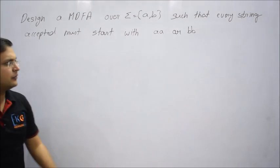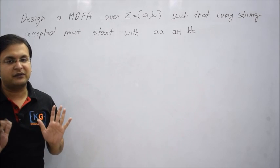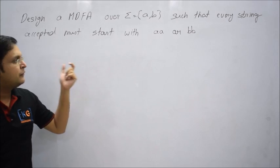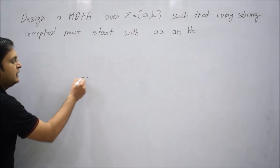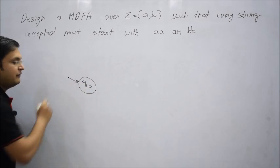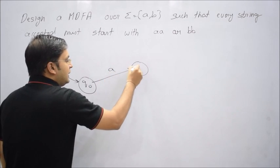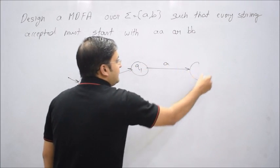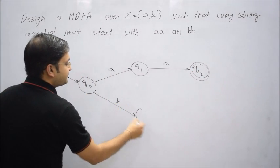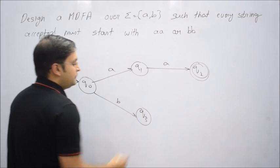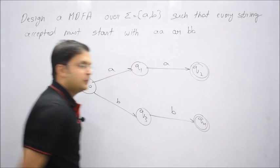Every time in designing, step number one is to first accept the smallest string possible. Here, what are the two smallest valid strings? Either 'aa' or 'bb'. So let me remember 'aa' by going to q1, then if 'a' comes again go to q2, which should be a final state. On q0 if 'b' comes, let me go to q3, and if 'b' comes again, go to q4, which will also be a final state.